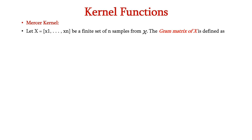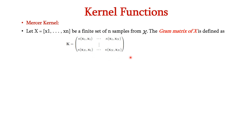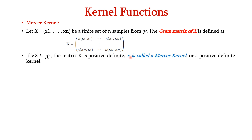Next, let us see about the Mercer kernel. Let X be equal to X1 to Xn, a finite set of n samples from input space X. The Gram matrix of X is defined as K equal to K of X1 comma X1 up to K of X1 comma Xn, with the last row being K of Xn comma X1 up to K of Xn comma Xn. If for all X belonging to the input space, the matrix K is positive definite, then K is called the Mercer kernel or a positive definite kernel.